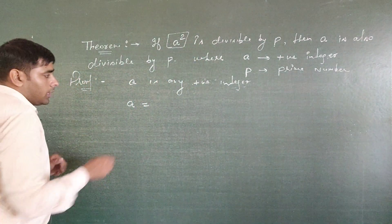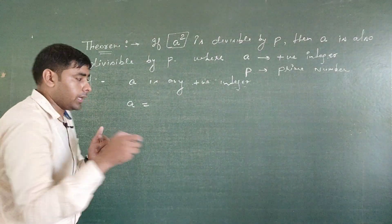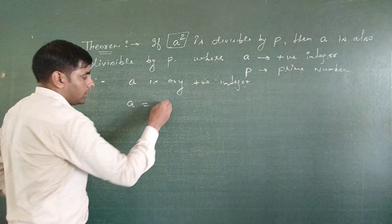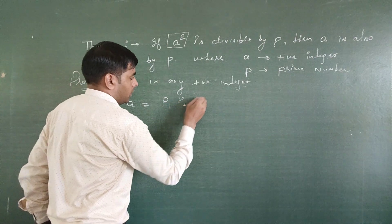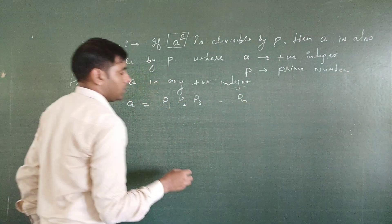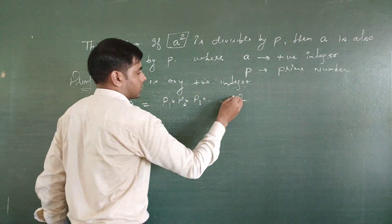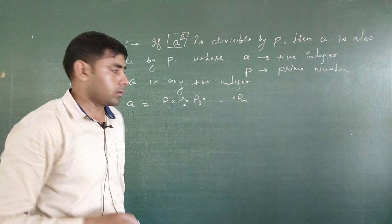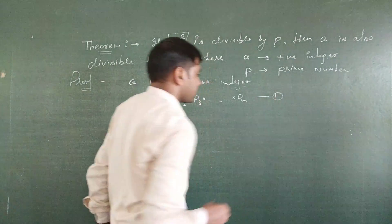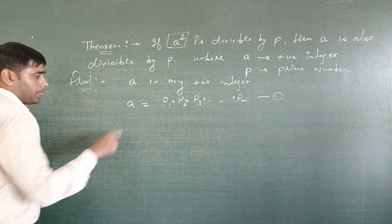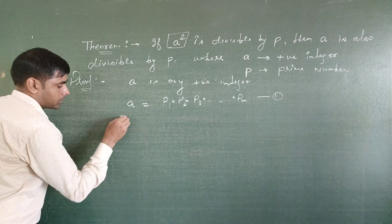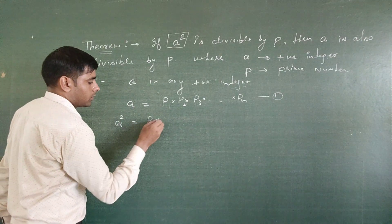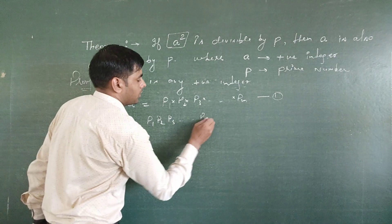Let the prime factors of a be p1, p2, p3, ..., pn. So a equals p1 × p2 × p3 × ... × pn. Call this Equation 1. Now, squaring both sides, a squared equals (p1 × p2 × p3 × ... × pn) × (p1 × p2 × p3 × ... × pn).